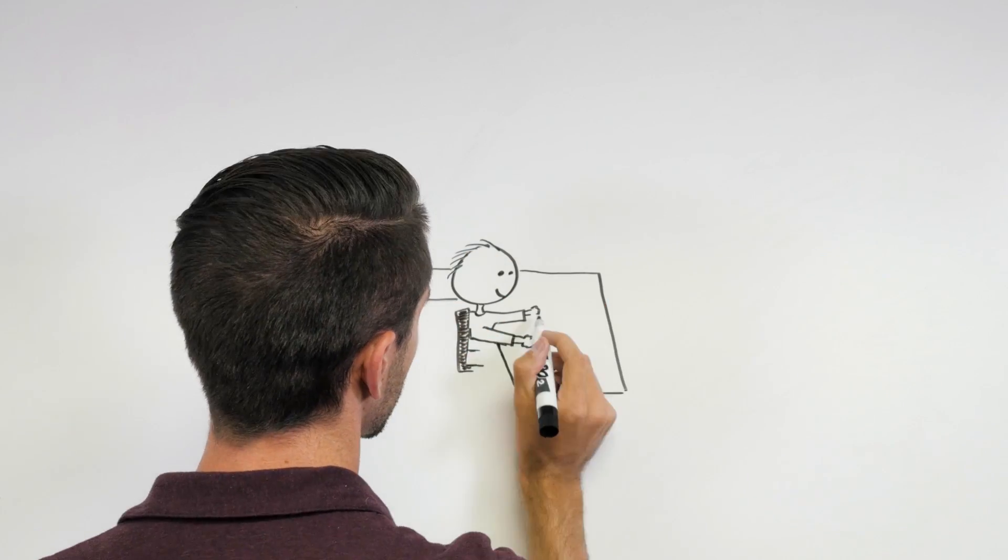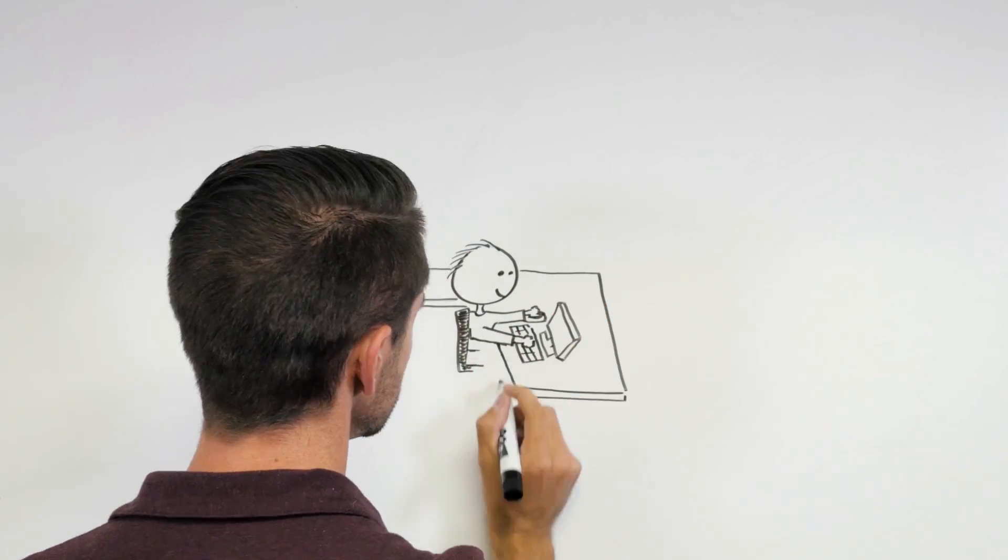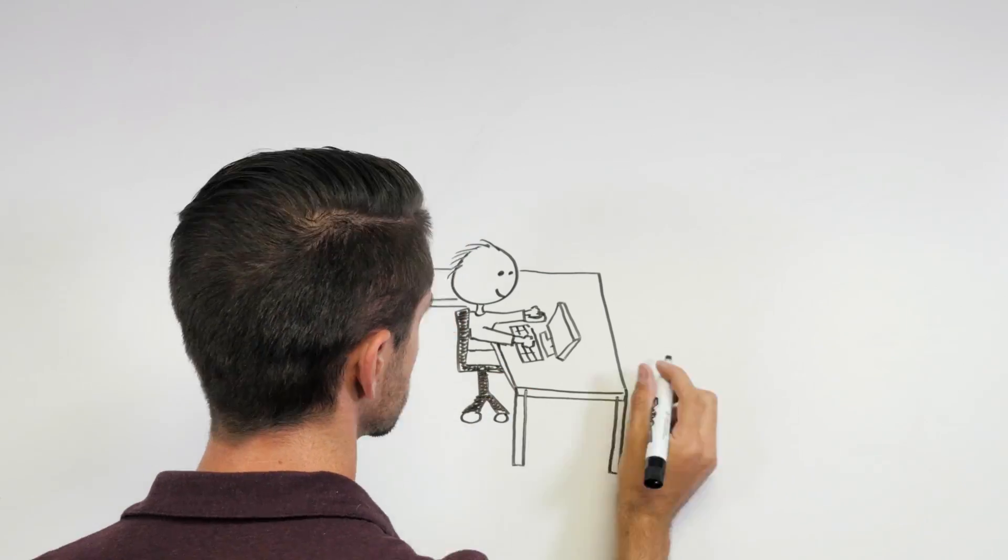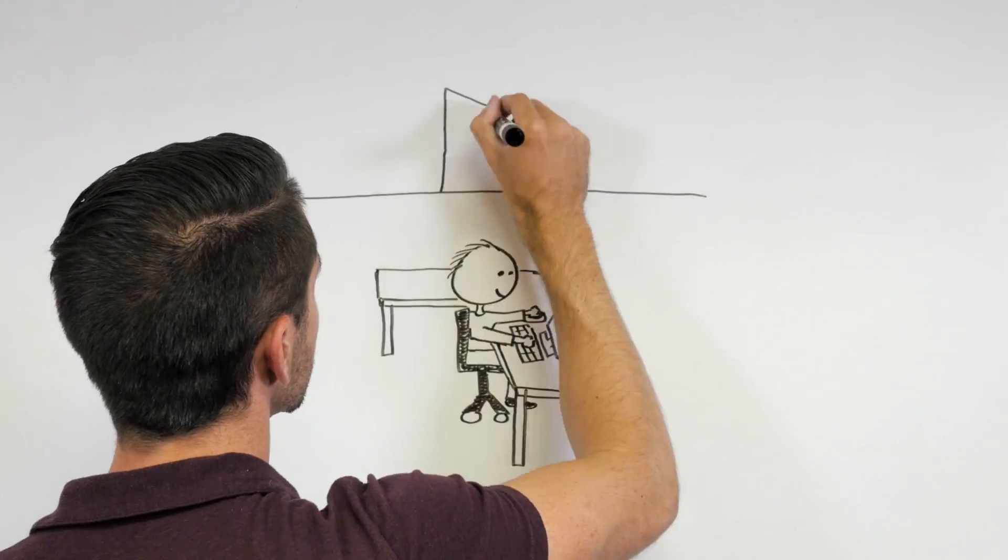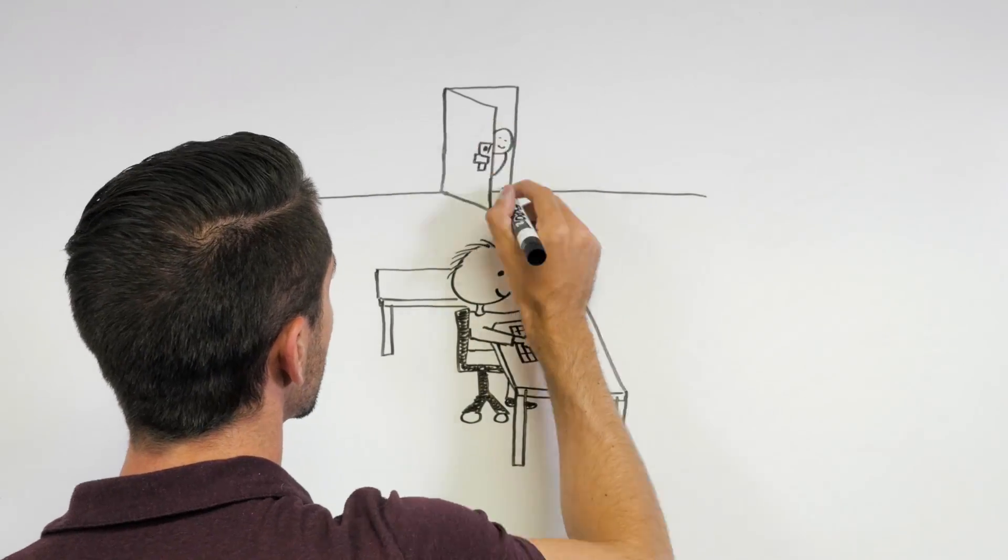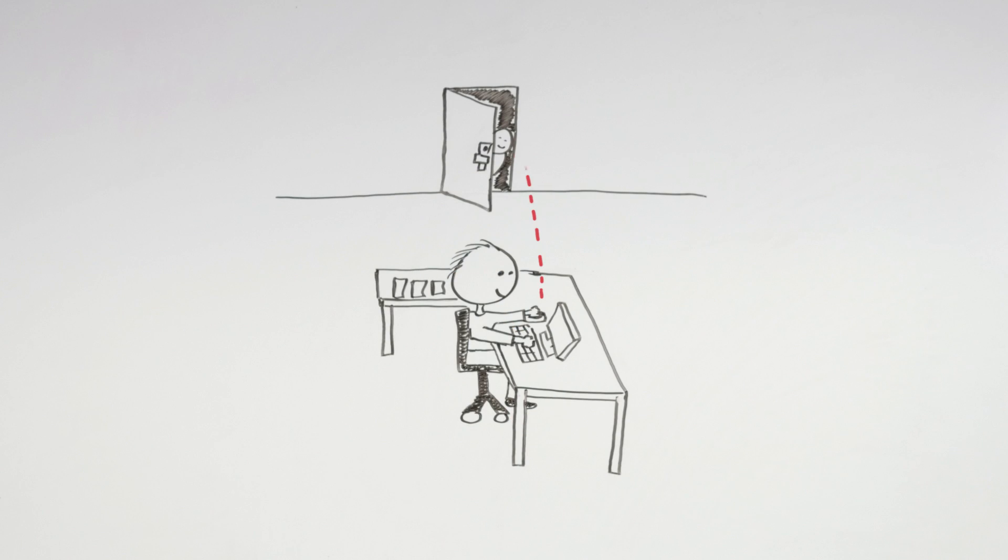Electric strikes are commonly used for access control where an attendant, such as a receptionist or security guard, uses a push button or access control panel to buzz someone into a restricted section of a building. Electric strikes are also frequently used with card readers for employee entrances.